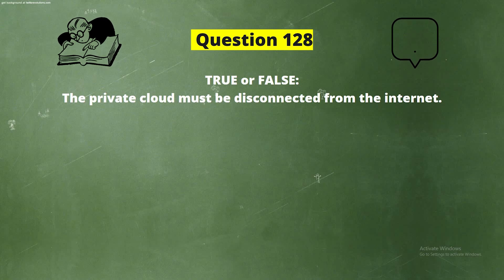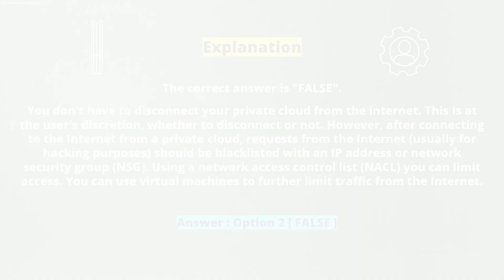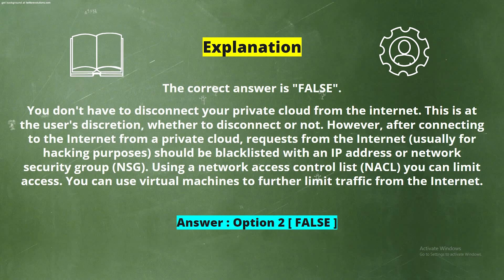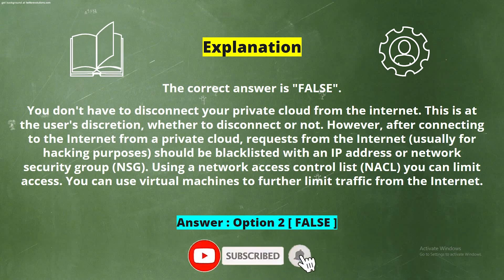Question 128. True or False? The private cloud must be disconnected from the internet. The options are Option 1, True, and Option 2, False. The correct answer is Option 2, False. Explanation: You don't have to disconnect your private cloud from the internet. This is at the user's discretion, whether to disconnect or not.